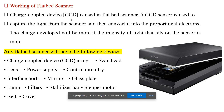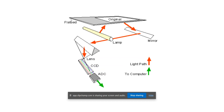Any flatbed scanner uses the following devices: Charge Coupled Device (CCD) array, scan head, lens, power supply, control circuitry, interface ports, mirrors, glass plate, lamp, filter, stabilizer bar, stepper motor, belt, and cover.